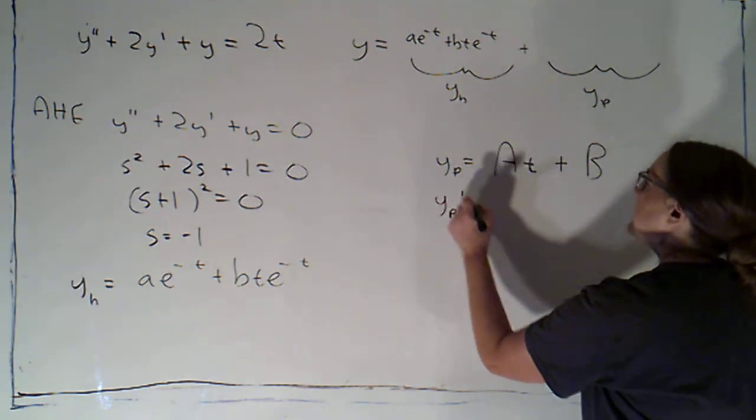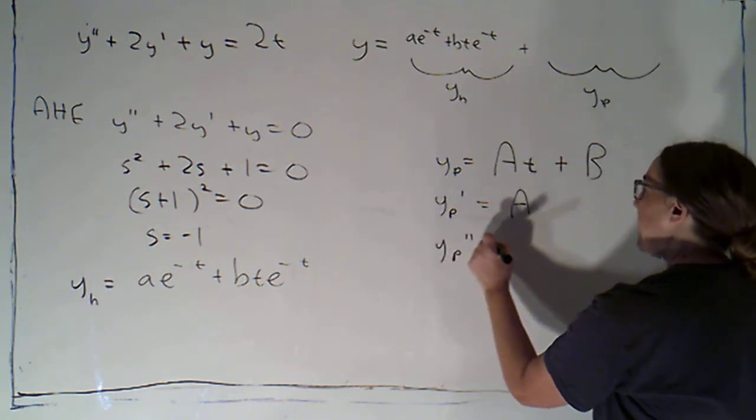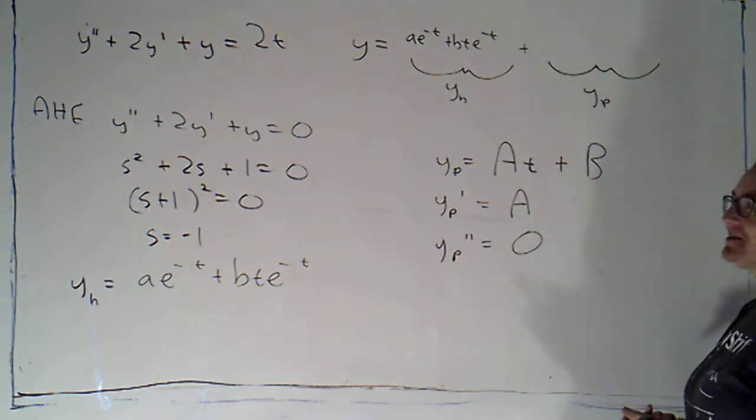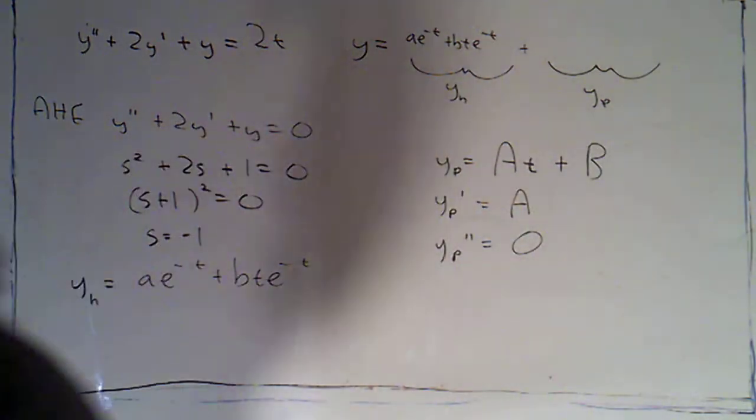Then yp prime would just be a, and yp double prime is just zero. So let's see if we can't solve for a and b.